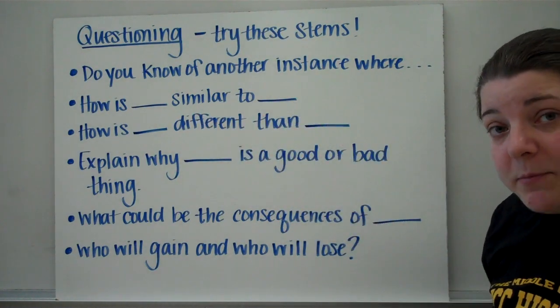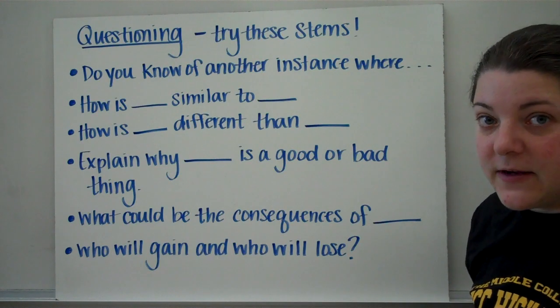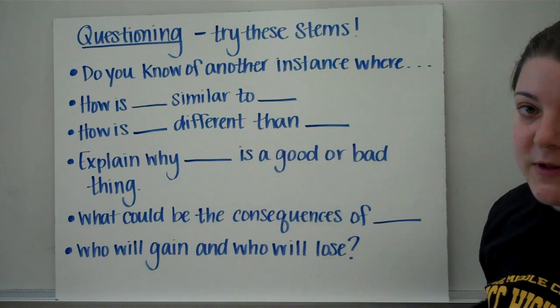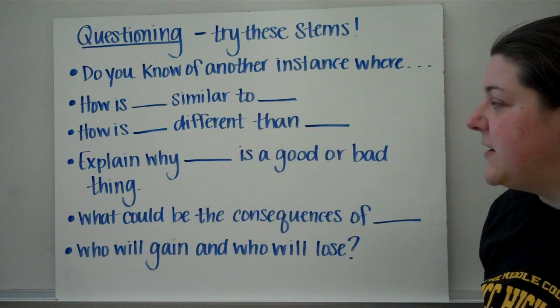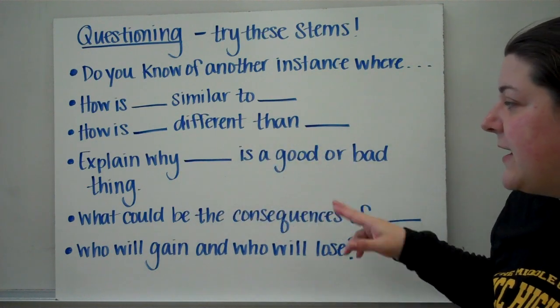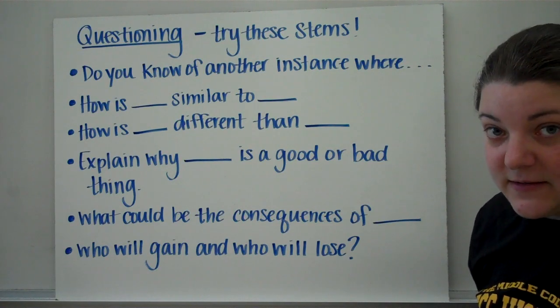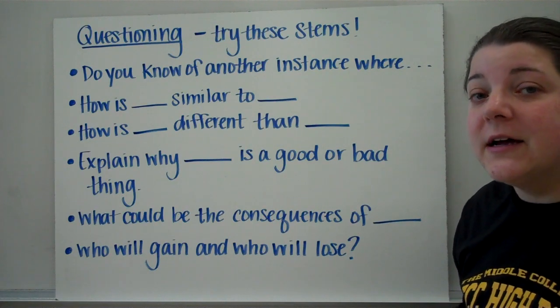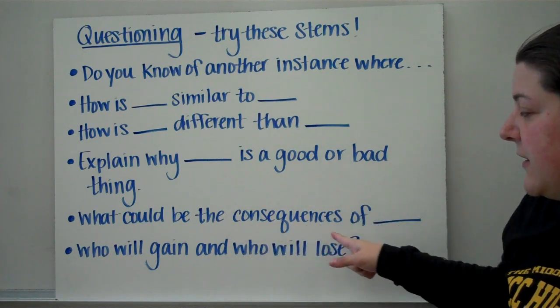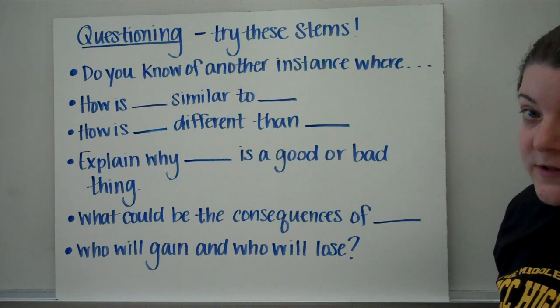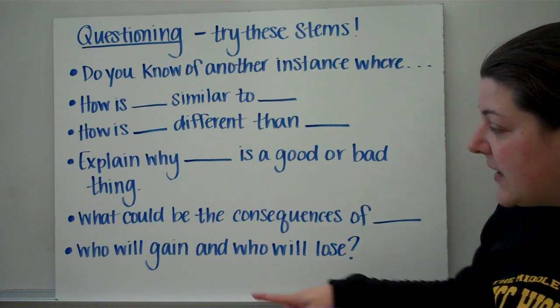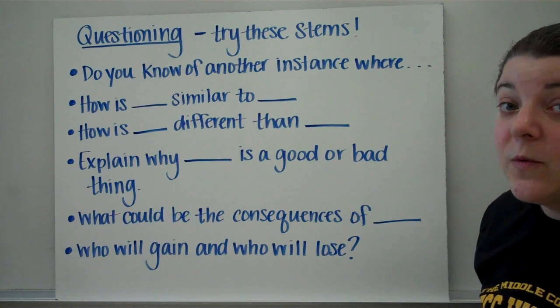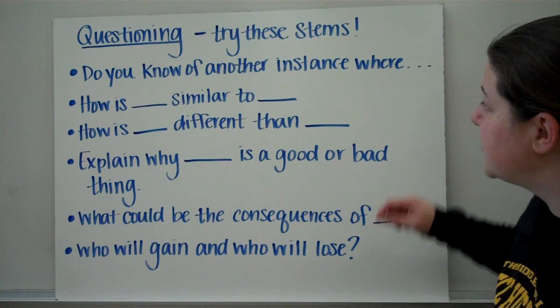'How is blank similar to blank?' Answering that question helps you make a connection. 'How is blank different than blank?' Answer the question. 'Explain why blank is a good or bad thing.' Once you've made the explanation, you've made a connection. 'What could be the consequences of blank?' Once you answer that, you've made the connection. 'Who will gain and who will lose?' Once you've answered that question, you're making a connection.